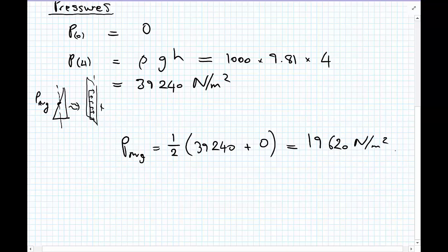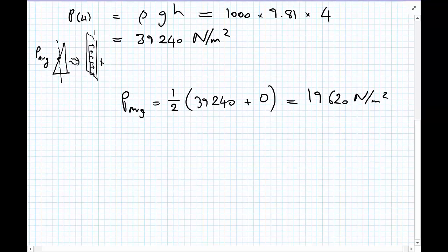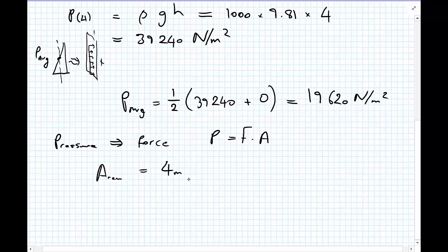And from this average pressure, we can convert to the total force. So from pressure, we're now going to calculate the force using P equals force times area. And now in this case, our area is equal to 4 meters high by 1 meter out of plane, which equals 4 meters squared.